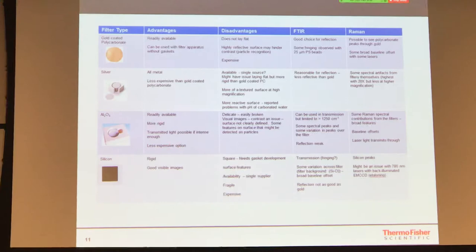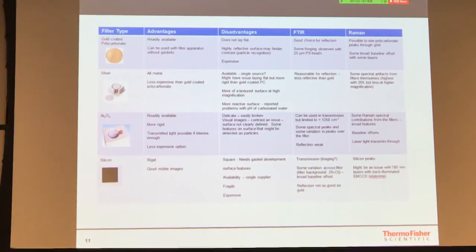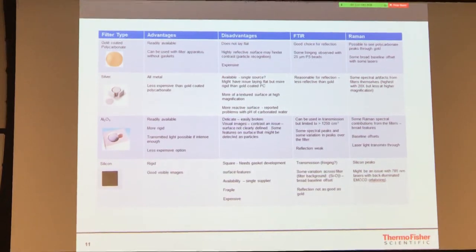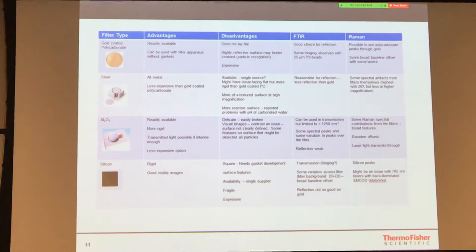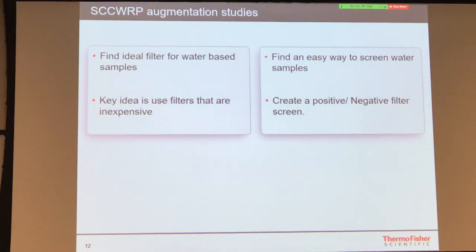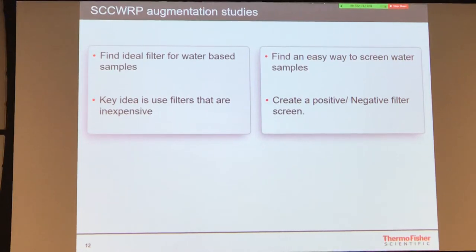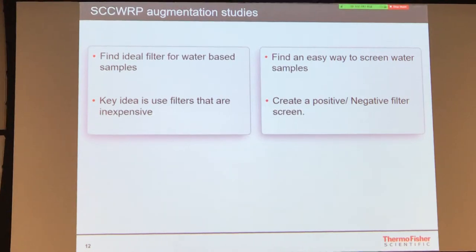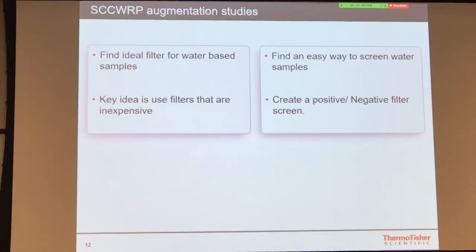We compare and contrast existing filters, but we are also looking at other options. We're working with a partner company as part of our SCORP augmentation study — to find a simple, easy way to screen water samples. Right now, if you have 100 gallons of water, you'll have individual filters, and going through all those filters with microscopy, some may have one or two particles, some may have none.